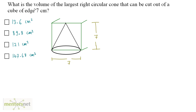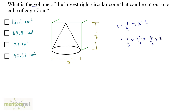Now we want the volume of this cone. The volume equals 1/3 × π × r² × h. So this is 1/3 × (22/7) × r². The diameter is 7, so the radius is 7/2. Thus r² is (7/2) × (7/2), and the height is 7. The 7 in the numerator and the 7 in 22/7 cancel out, leaving 1/3 × 22 × 7 × 7 divided by 2 × 2.